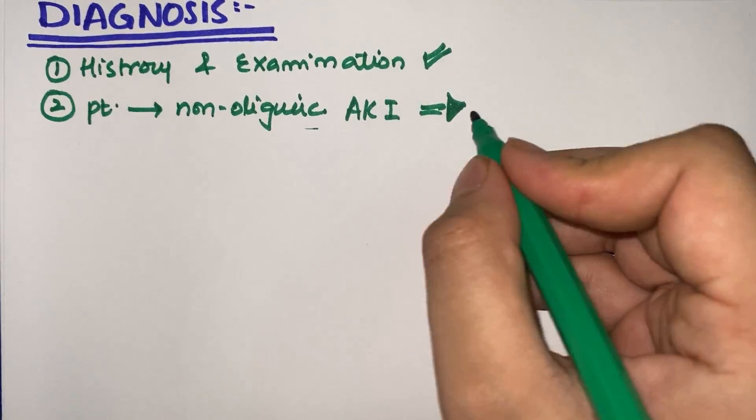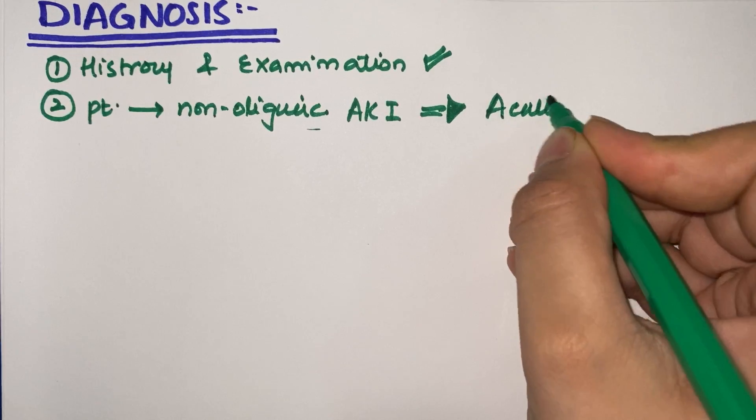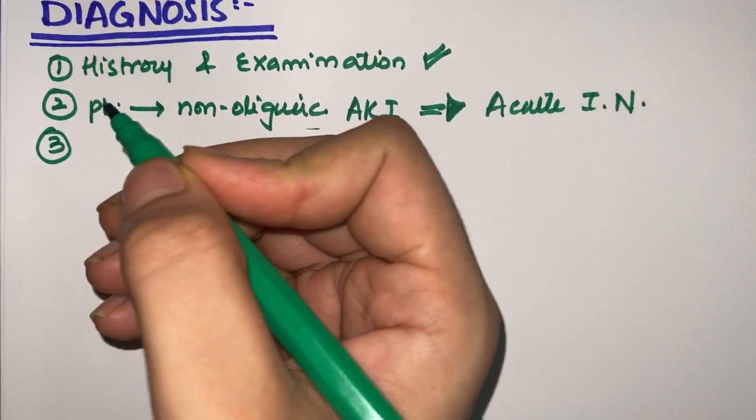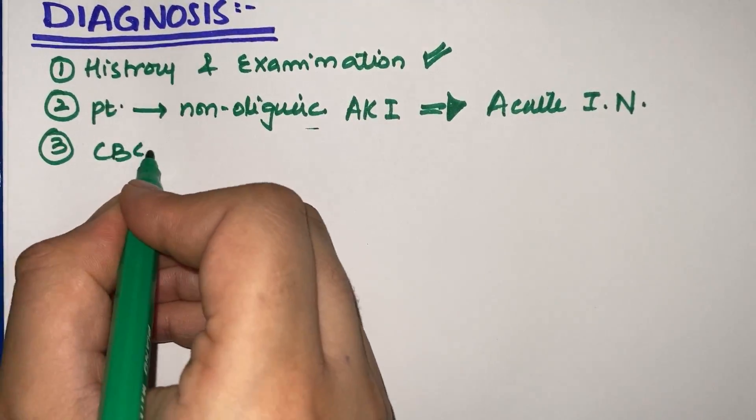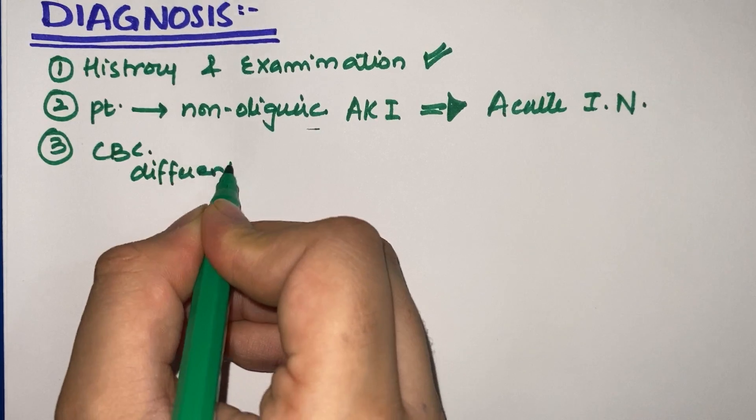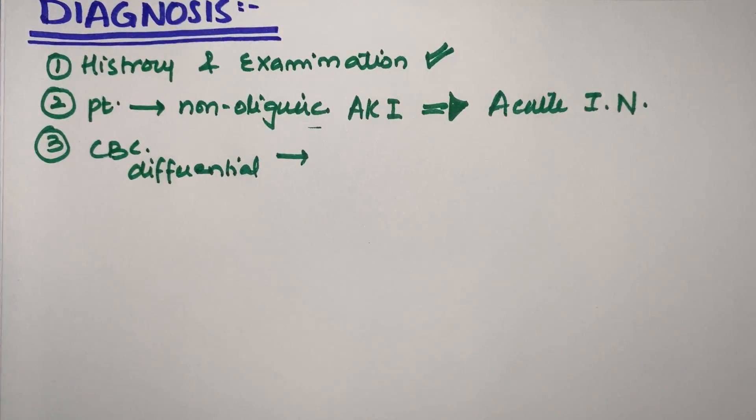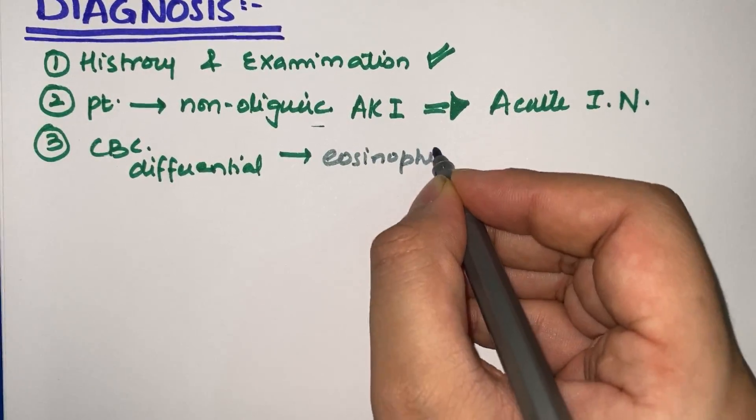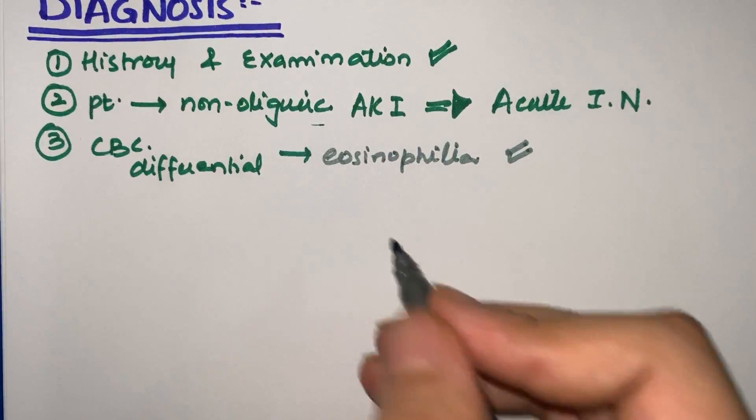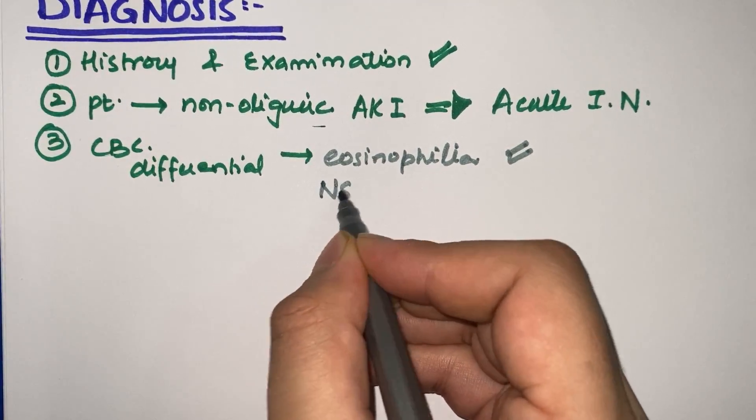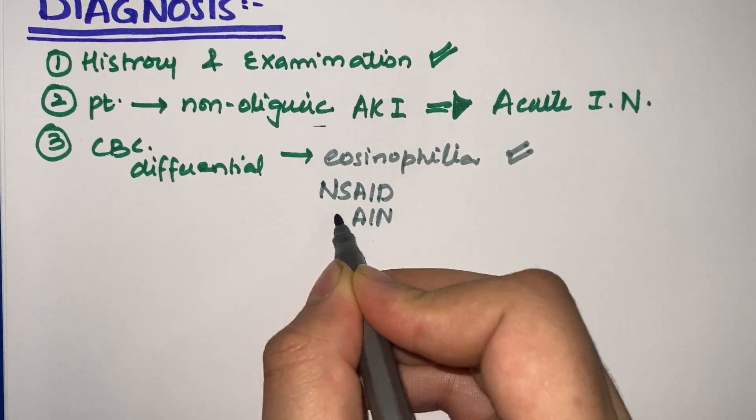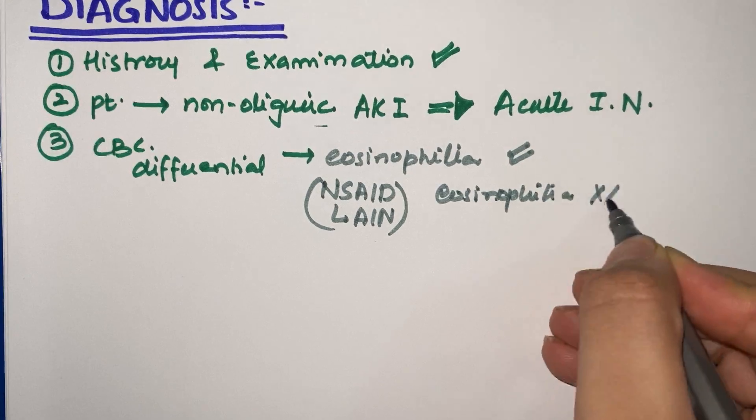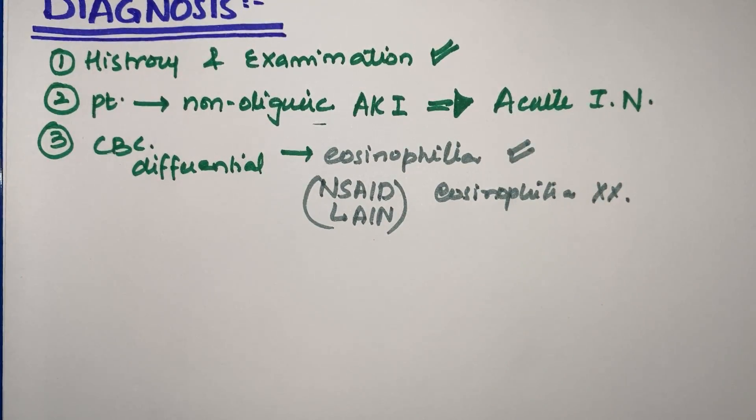Third, what will lab results show? On CBC with differentials, we will find eosinophilia—elevated eosinophil levels in the blood. This is a very important point. However, in NSAID-induced acute interstitial nephritis, eosinophilia will not be seen.